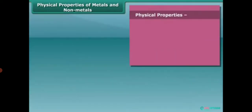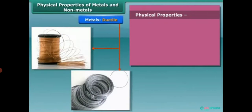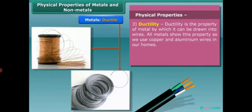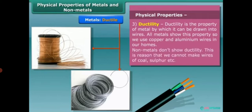The property of metal by which it can be drawn into wires is called ductility. It is the third property of metals. Non-metals do not show ductility.